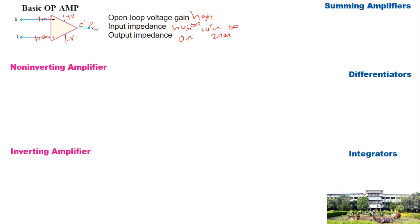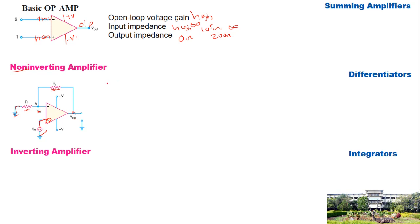In the non-inverting amplifier configuration, the input signal is applied to the non-inverting terminal. The inverting terminal has an input resistance with its other end grounded, and a feedback resistance connects the output back to the inverting terminal. The closed-loop gain ACL equals 1 plus Rf divided by Ri.